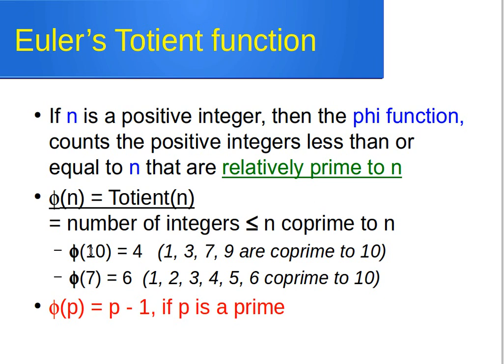For example, phi(10) equals 4. We list the positive integers less than or equal to 10: 1, 2, 3, 4, 5, 6, 7, 8, 9. The ones co-prime to 10 are 1, 3, 7, and 9. The numbers 2, 4, 6, and 8 are excluded because their GCD with 10 is 2, not 1, so they are not co-prime to 10.